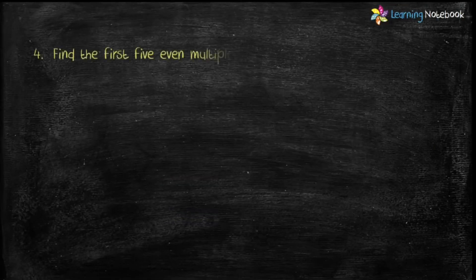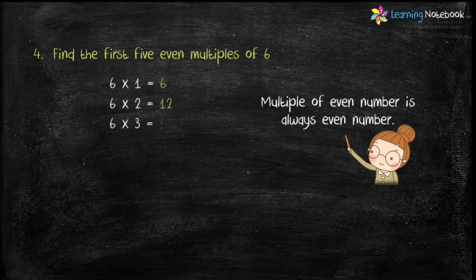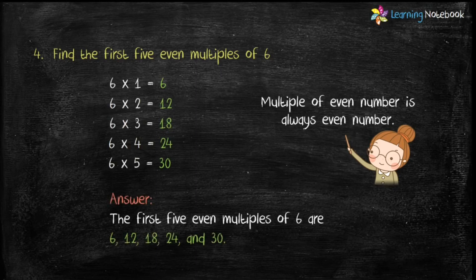Question four: find the first five even multiples of six. Again we have to find the first five even multiples, but here six is an even number, and a multiple of an even number is always an even number. So let's multiply six by 1, 2, 3, 4, and 5. Therefore the first five even multiples of six are 6, 12, 18, 24, and 30.